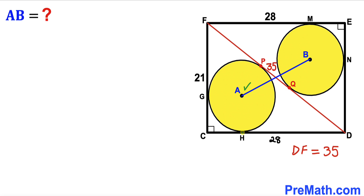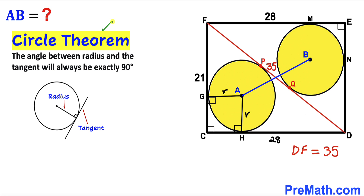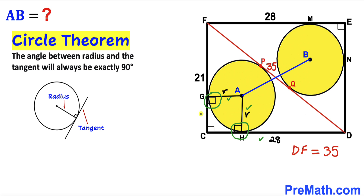Now let's connect center A with the points of tangency H and G. As you can see, AG and AH are the radii of this circle — call this radius lowercase r. By the circle theorem, the angle between a radius and a tangent is always 90 degrees, so both of these angles are 90 degrees.